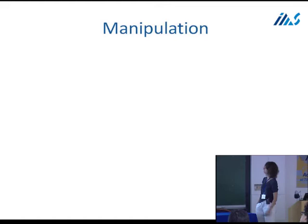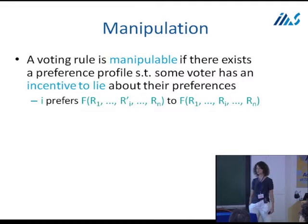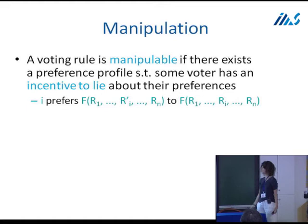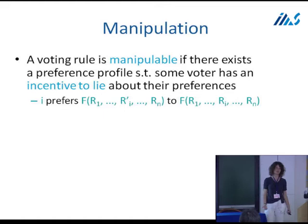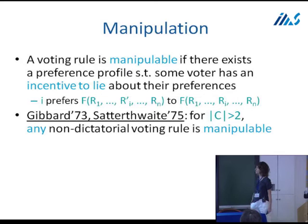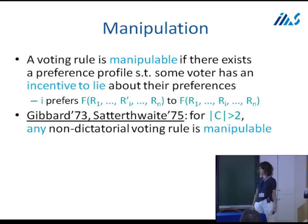The problem I'm interested in is voting manipulation. A voting rule is manipulable if some voter can lie about his preferences and get a better outcome. Formally, the voting rule is manipulable if there is some voter i who can submit a non-truthful vote R'_i instead of his truthful vote R_i, and would prefer the result of the non-truthful voting. Manipulation is problematic because you want voters to vote truthfully and aggregate true preferences. Unfortunately, it's well known that it's not possible to avoid - that's the classic Gibbard-Satterthwaite theorem: if you have more than two candidates and want your voting rule to be non-dictatorial, the voting rule is going to be manipulable.